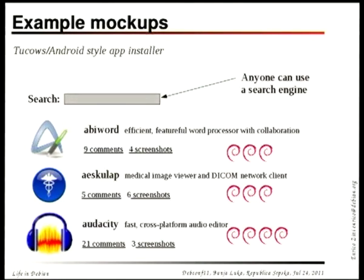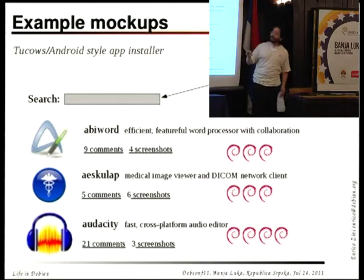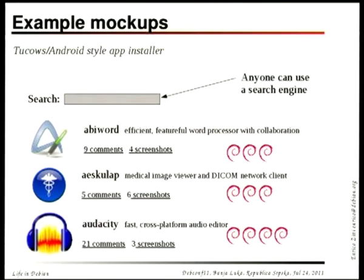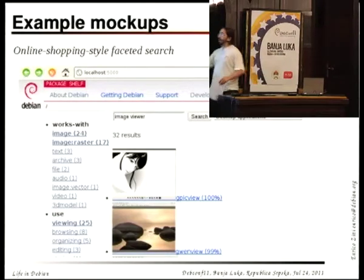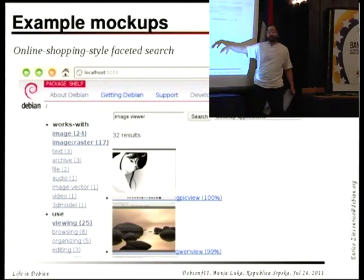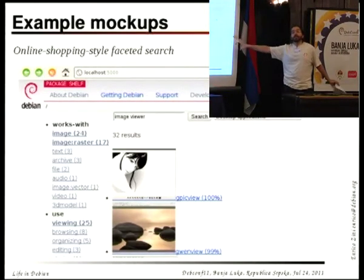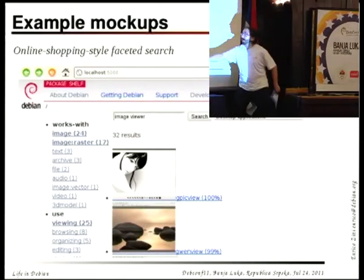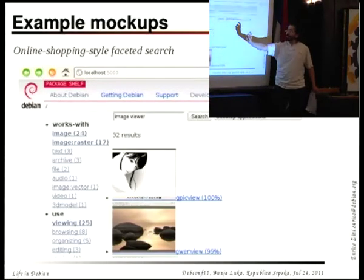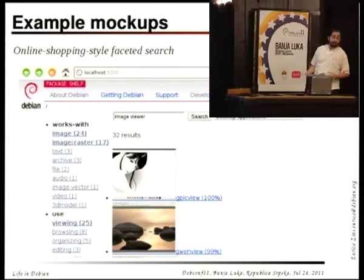Or you can make something like Android app installers with screenshots, comments, ratings — a searchy thingy. Cows would work very nicely in Debian, but they've been used already. Or you can make something like online shopping sites — Amazon-style — where you type something and get categories on the left, screenshots as a preview, and descriptions. This is a mockup that already works. I published the code on my blog and not many people noticed it, but just to say it can be done. You just need to show tag descriptions instead of ugly tag names, maybe put the proper description, and you have it. Someone just needs to do it and deploy it somewhere.